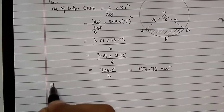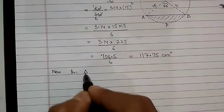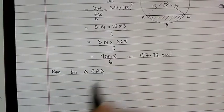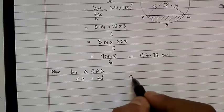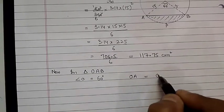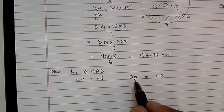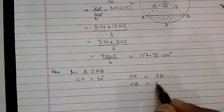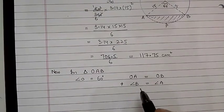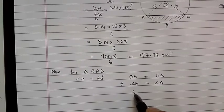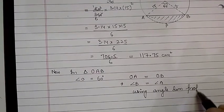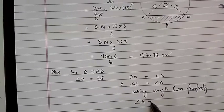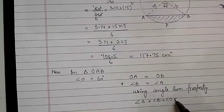Now in triangle OAB, angle O is given as 60 degrees. OA and OB are both radii, so they are equal. In a triangle, if two sides are equal, their opposite angles are also equal — so angle A equals angle B. Using the angle sum property: angle A + angle B + angle O = 180 degrees.